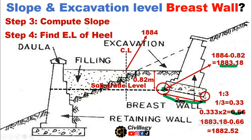Subtracting 0.66 from the toe level gives you the excavation level of the heel. The level of this point is 18882.52. These are the four simple steps to calculate the excavation level and slope of the base of a breast wall. That's all for today. If you are new to my channel, please subscribe and don't forget to press the bell icon to get video updates.